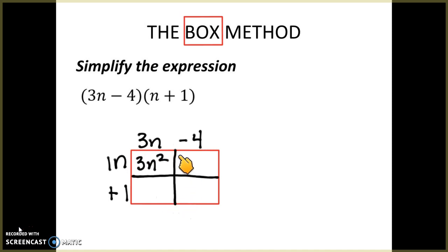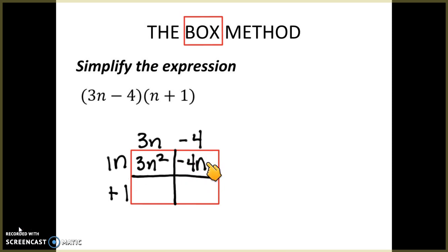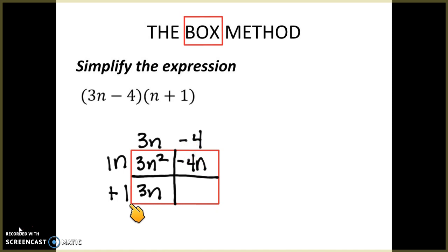I repeat that same process for each box. In the next box I take 1n times negative 4: one times negative four is negative four, and I write n — so that's negative 4n. Moving down, positive 1 times 3n stays the same: 3n. Then 1 times negative 4 is just negative 4. So now I have all four boxes filled with the products of the outside terms.